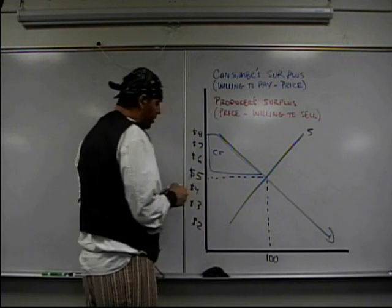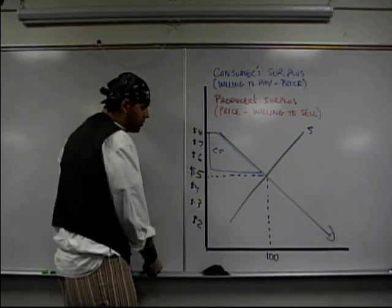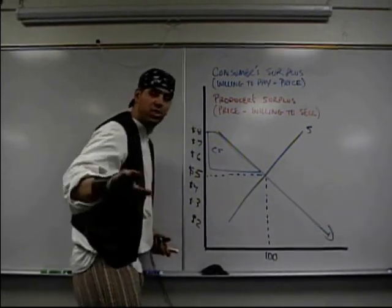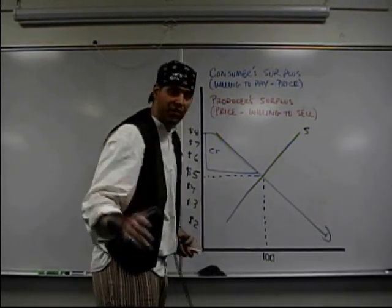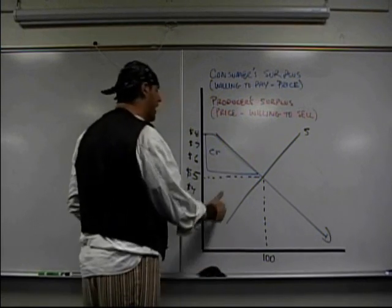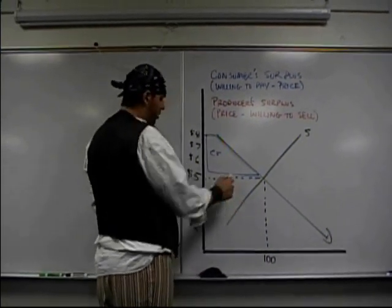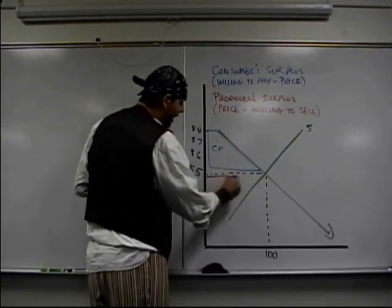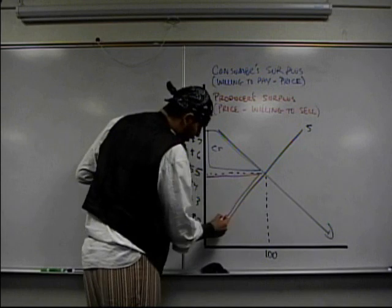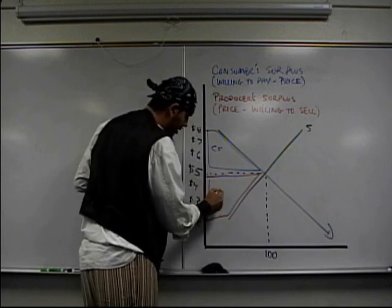Down here is producer surplus. Somebody's willing to sell it for $2 — they didn't sell it for $2, they sold it for $5. Someone's willing to sell it for $3, they sold it for $5. So down here is producer surplus.